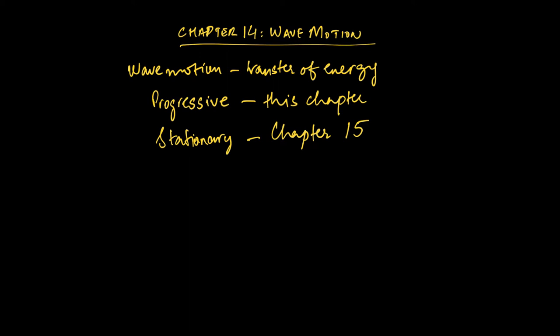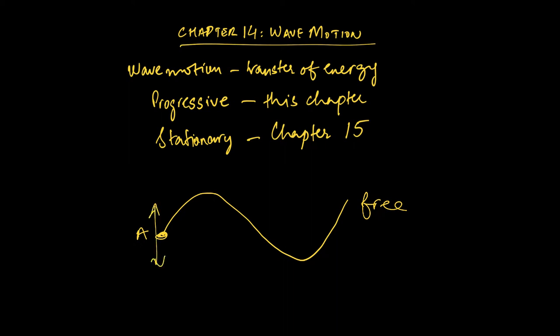Let's look at a couple of classifications of waves. Assume you have a rope that's free and you start moving it up and down. The rope will take a wave shape — your hand is at one end and the other end is free. Over the course of some time, as you move your hand up and down, this is the shape the rope ends up taking.